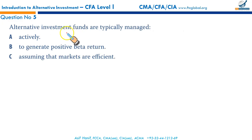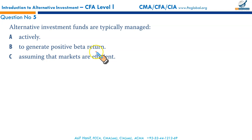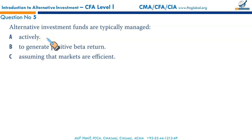Question number five. Alternative investment funds are typically managed actively to generate positive beta return, assuming that markets are efficient. There are many different approaches to manage alternative investments, but most of the time these funds are actively managed. That makes A the correct option.